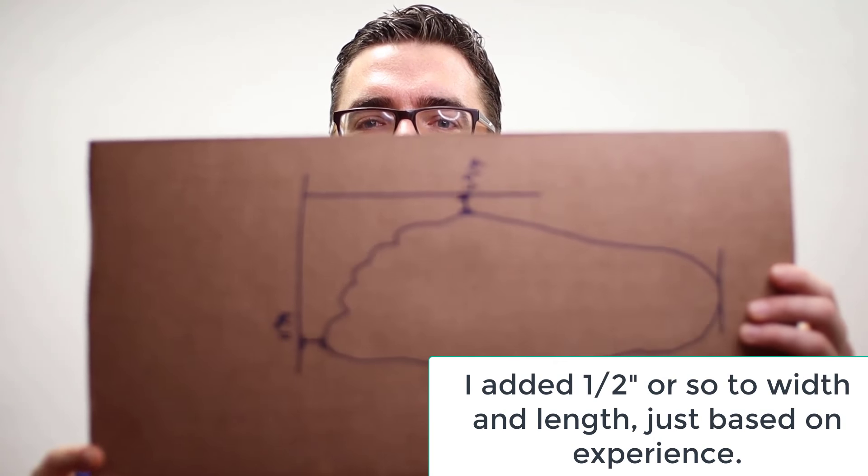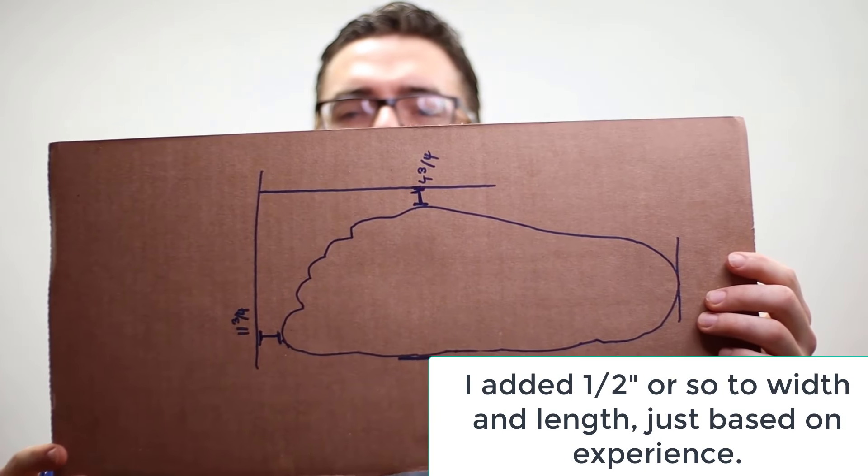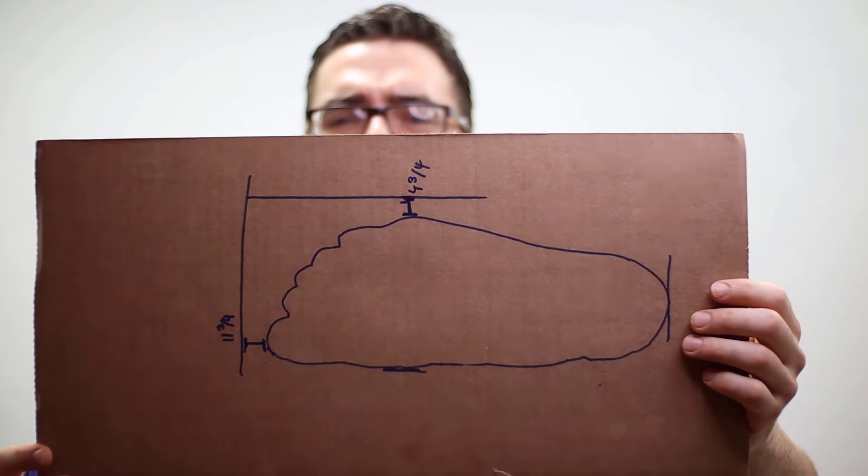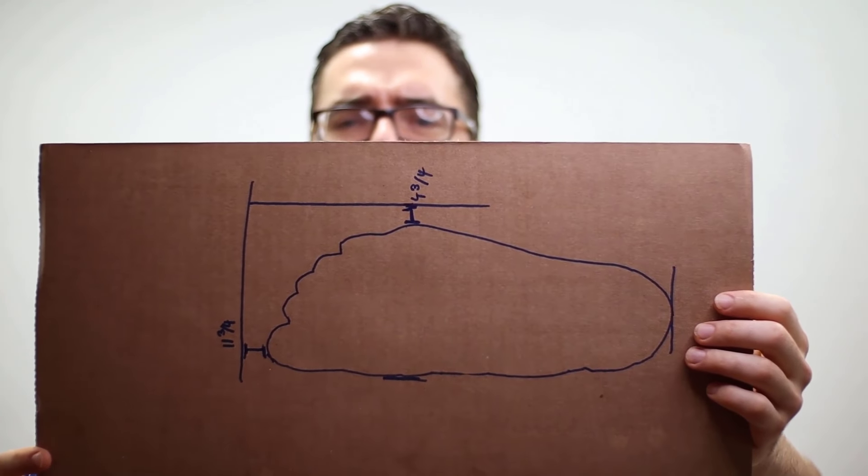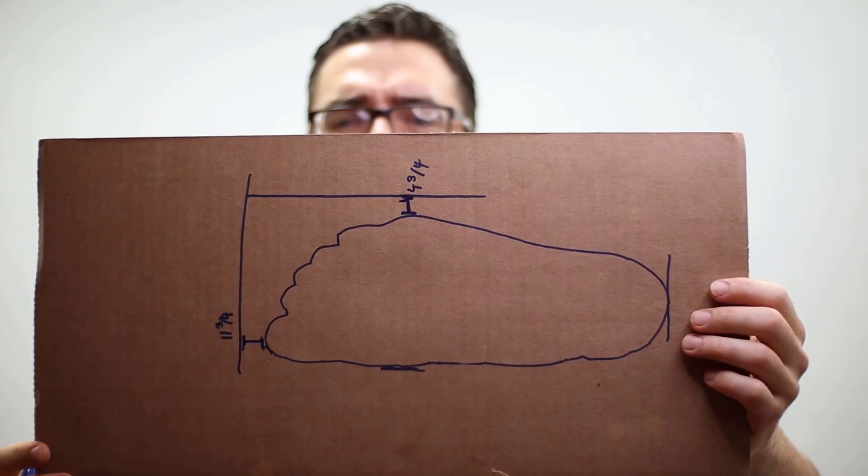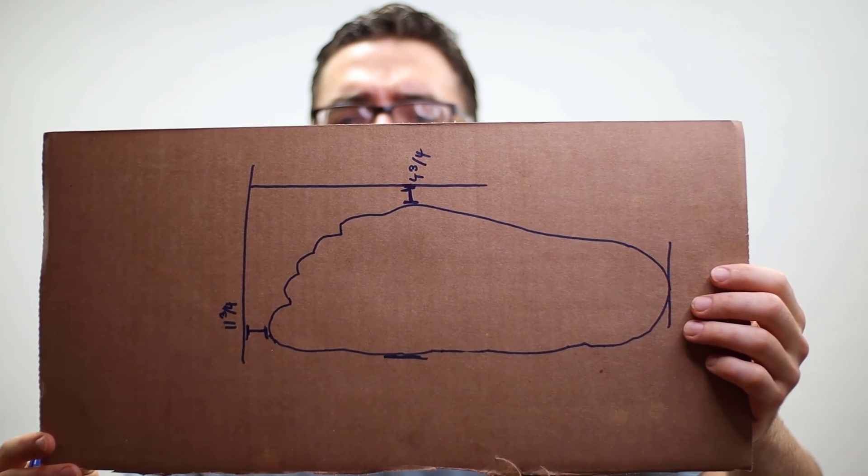We just went over how to draw our foot. Here's what mine looks like. I measured 11 and three quarters. I rounded it up to about a 12-inch foot and measured the width. The next thing you do is print out the size chart. Go on Google, see what the width is, see what the length is.